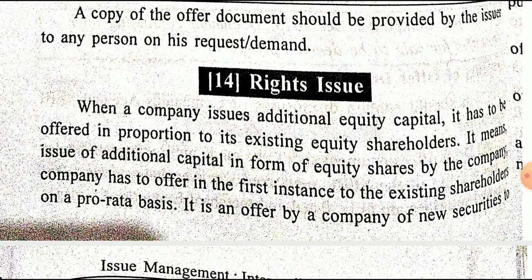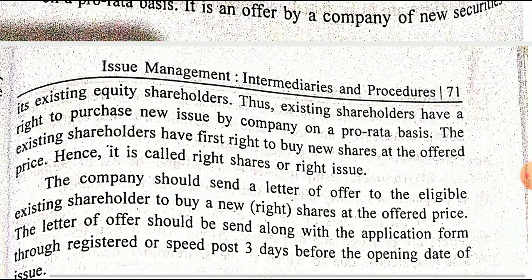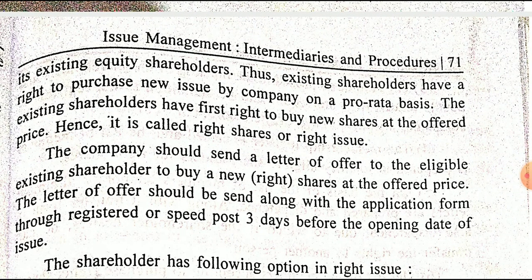Right issue means that when a company issues additional equity shares, they have to be offered in proportion to existing equity shareholders. It is the issue of additional capital in the form of equity shares on a pro-rata basis. The existing shareholders have the first right — priority — to purchase new shares issued by the company at the offer price. This first right given to existing shareholders is called a right issue.